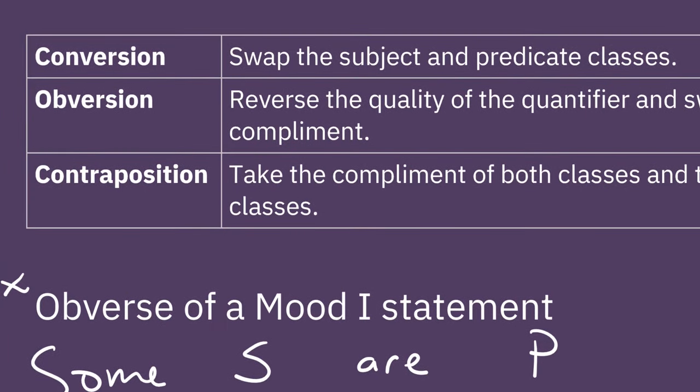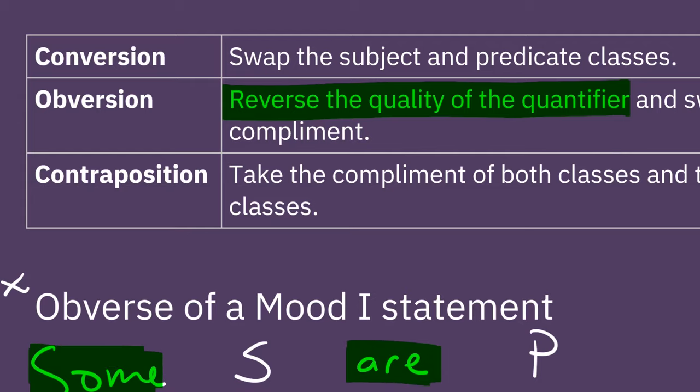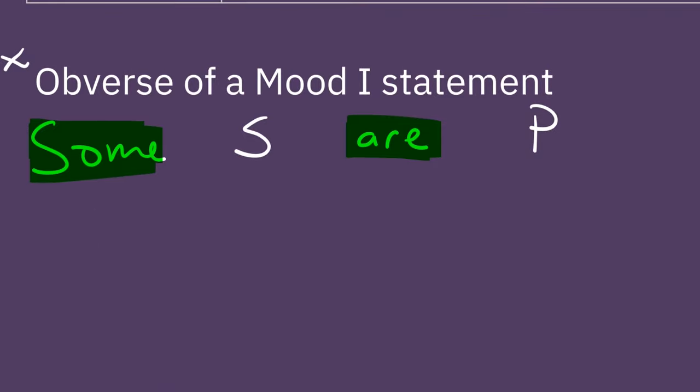First thing we need to do, as we saw up here, is we need to reverse the quality of the quantifier. Our quantifier is some, but really it's some are. So we take the reverse of those things and we get some are not.